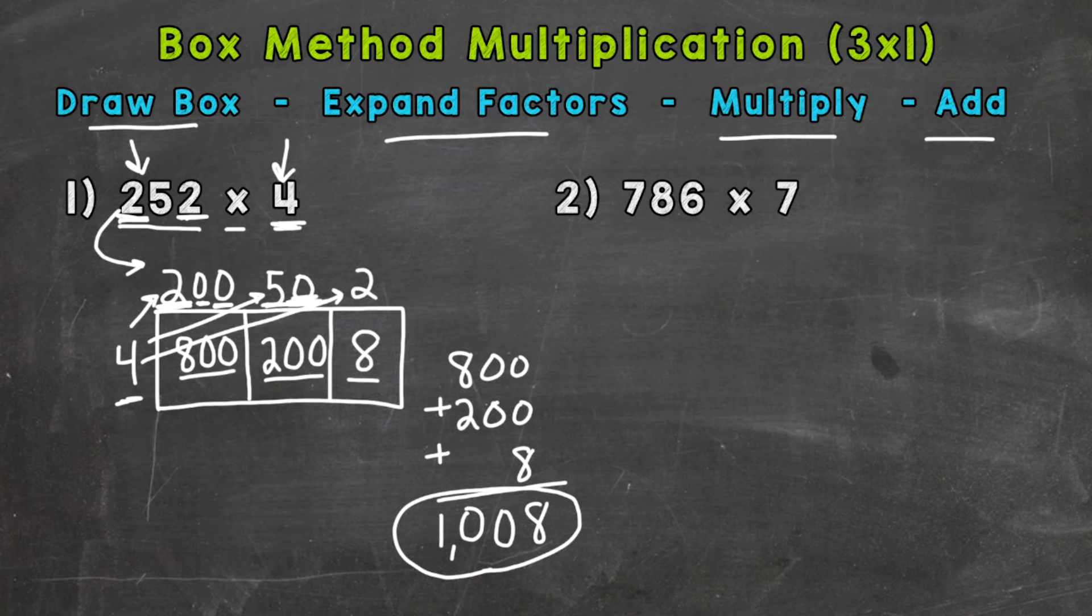Now I want to show you real quick how this box method is very similar to the traditional standard algorithm, which would be set up like this. So 252 times 4. And the first thing we start with is 4 times this 2 here, which is 8. So that's very similar to the 4 times 2 we did in the box method.